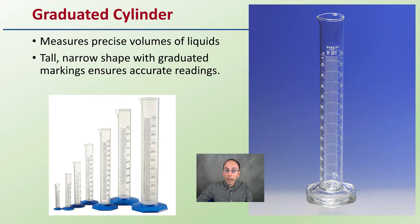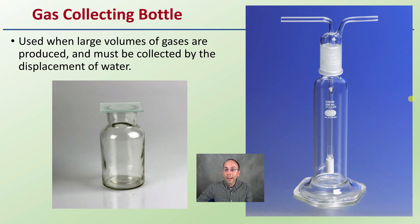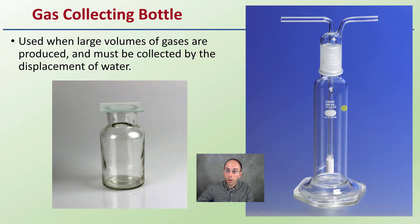A graduated cylinder is another one that will be used very commonly because it's used to measure volumes of liquids very precisely. They come in a whole host of different sizes, so depending on what you're trying to measure, choose the size that's appropriate. A gas collecting bottle also comes in different shapes and sizes, and as the name implies, it's utilized to collect gases — for example, from the displacement of water in certain experiments.